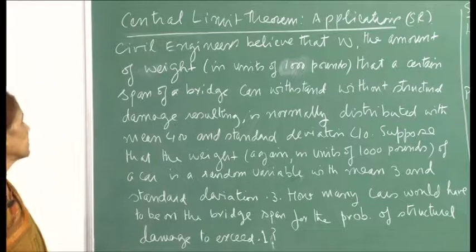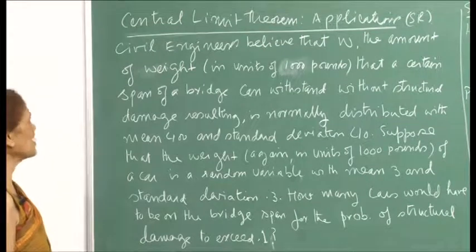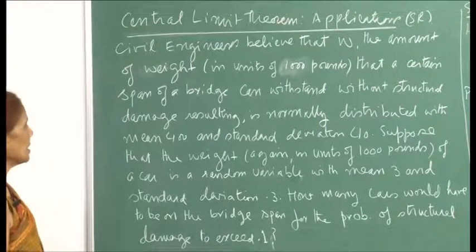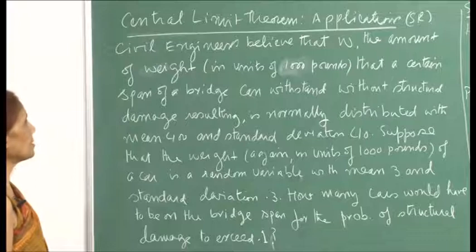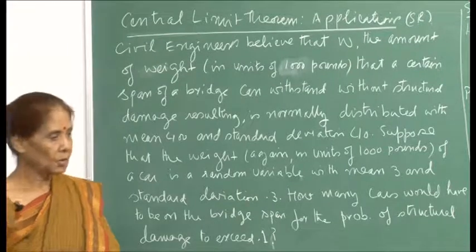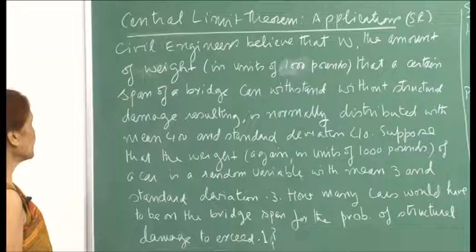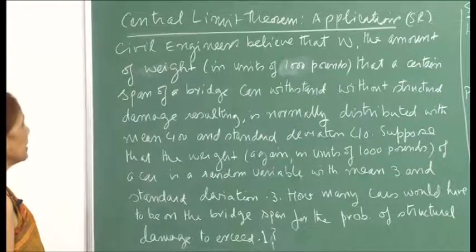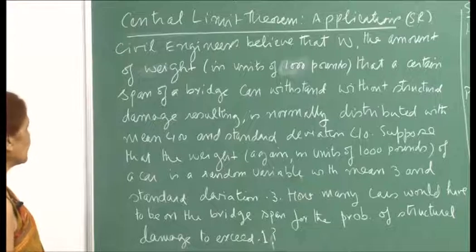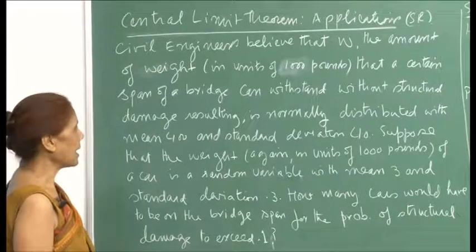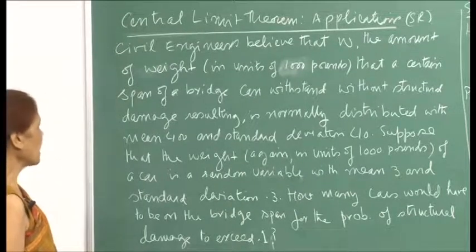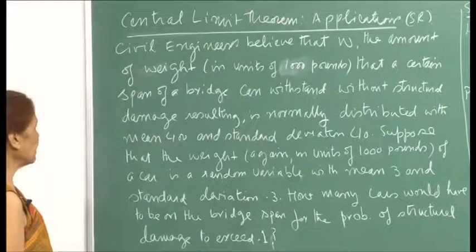I will continue with the central limit theorem and its applications. This example is taken from Sheldon Ross's book on probability theory. The idea here is that civil engineers believe that w, the amount of weight in units of 1000 pounds that a certain span of a bridge can withstand without structural damage, is normally distributed with mean 400 and standard deviation 40.